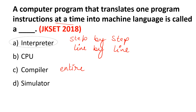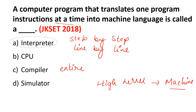Both interpreter and compiler convert high-level language to machine language, since the computer understands machine language. High-level language developers write code in high-level languages like C, C++, Java, and Python, which use 0s and 1s at the machine level. The key difference is that an interpreter translates line by line, while a compiler translates the entire program at once.